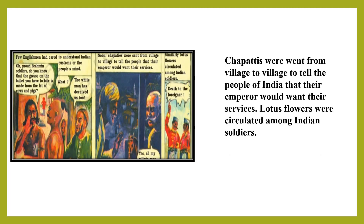To convey the message of the emperor, chapatis and lotus flowers were circulated among Indian soldiers. The message was that the emperor would want their services. Peasants would be ready to drive the British out.